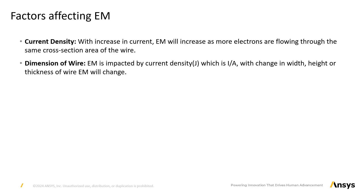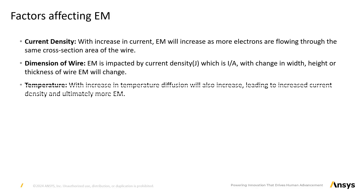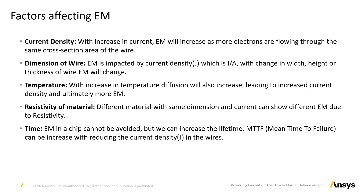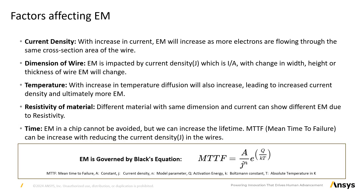Changes in either current or in area will affect electromigration. Temperature: an increase in temperature leads to higher kinetic energy of atoms, causing them to move faster and resulting in increased EM. Resistivity of material: some materials with higher conductivity are less impacted by electromigration. For example, copper has higher conductivity than aluminum. Hence, the speed of electromigration will be impacted by factors such as current, temperature, resistivity of material, defects in material, etc. This is governed by Black's equation.